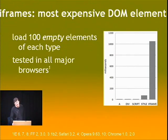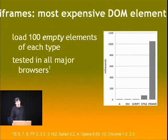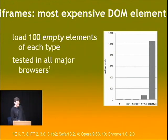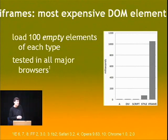Iframes are used on about four to six of the Alexa top 10 sites. The first thing to mention is that iframes are really expensive - one or two orders of magnitude more expensive than any other DOM element. If you're only using one or two, the extra expense of about 10 milliseconds isn't that big, but creating 100 of them is measurably significant. So use them sparingly.